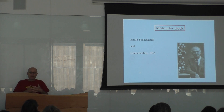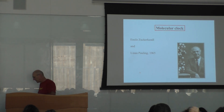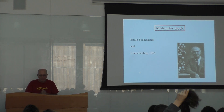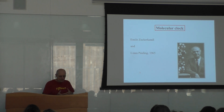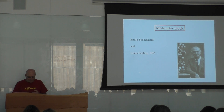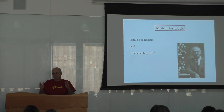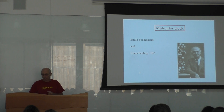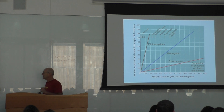Very early on, two scientists — really one, Linus Pauling, who had two Nobel prizes — wrote a very important paper in 1965 about molecular clocks. Their idea seemed very simple, yet at that time no one had thought about it in those terms. The idea is that if mutations occur, then the further away in time two organisms are, the more mutations separate them. And because of that, you can make what are called molecular clocks.